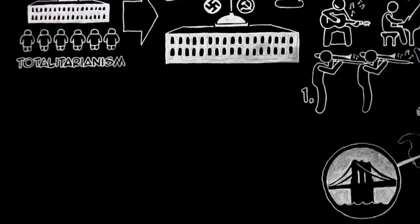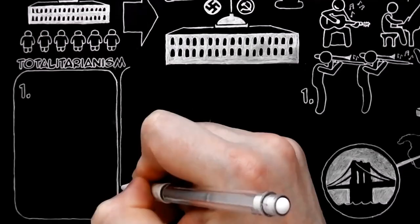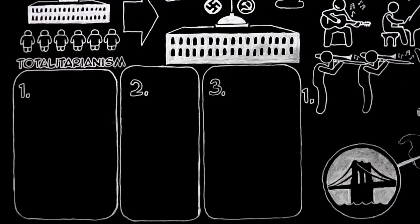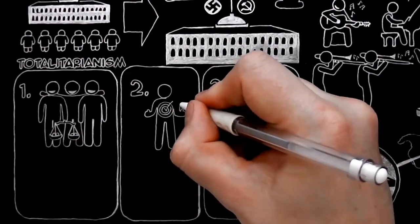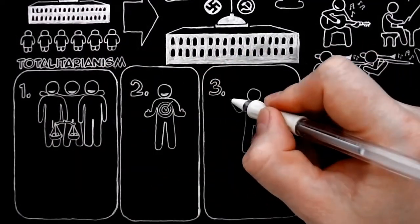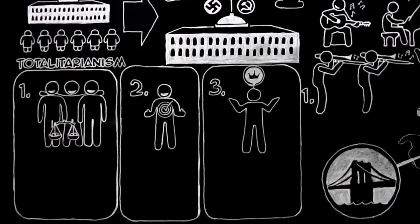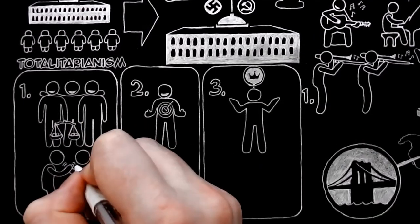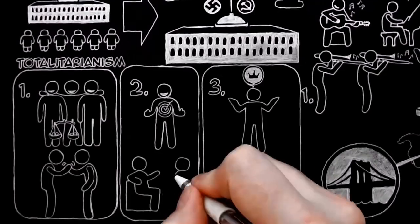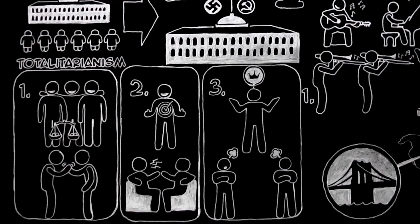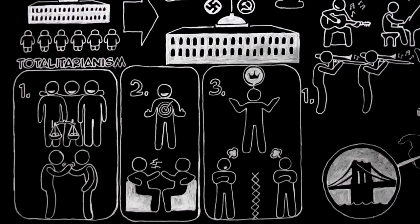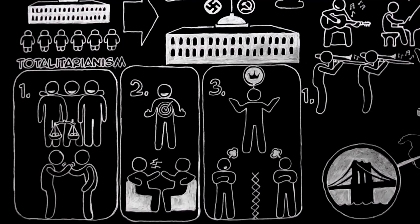It seems, then, that if we are to think about morality, we must think of all three departments, relations between man and man, things inside each man, and relations between man and the power that made him. We can all cooperate in the first one. Disagreements begin with the second and become serious with the third. It is in dealing with the third that the main differences between Christian and non-Christian morality come out.